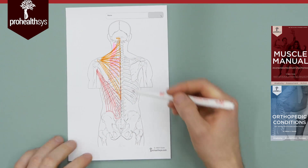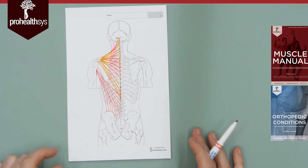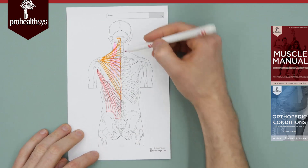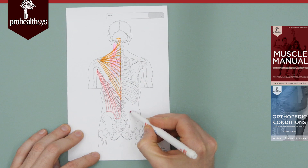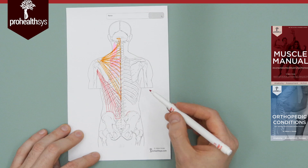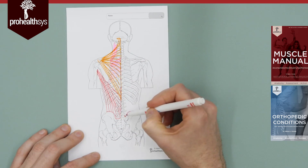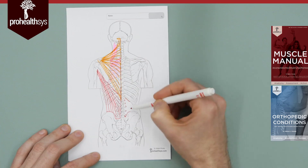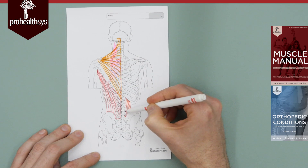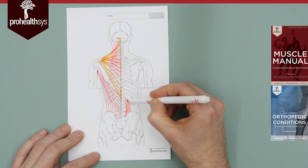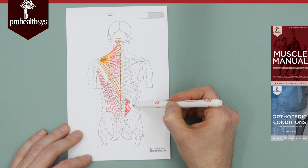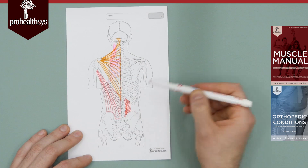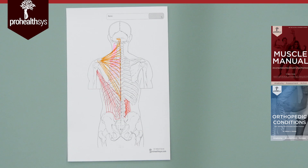Then we'd go through erector spinae, but first I want to make sure we get the most important muscle in all of anatomy: quadratus lumborum. Its origins are the iliac crest, iliolumbar ligament, and transverse processes of L1 to L5, and then it comes off the bottom of rib 12. It's just barely lateral to the erector spinae — that's consistent across hundreds of cadaver dissections.